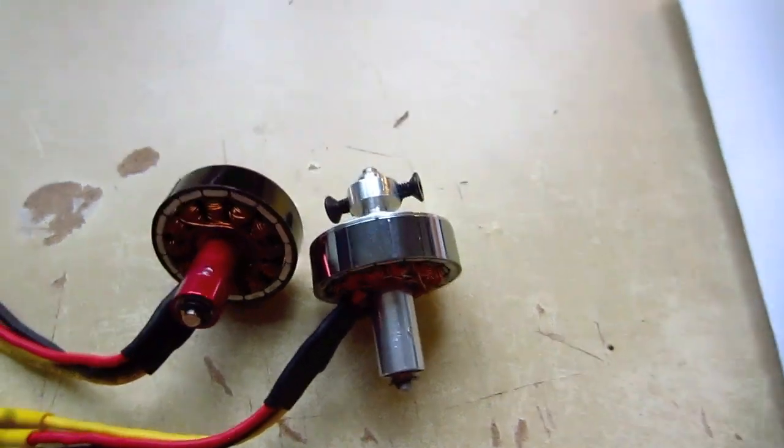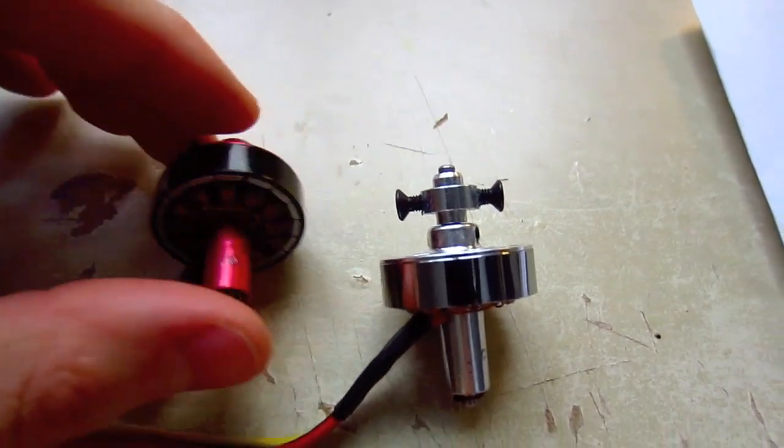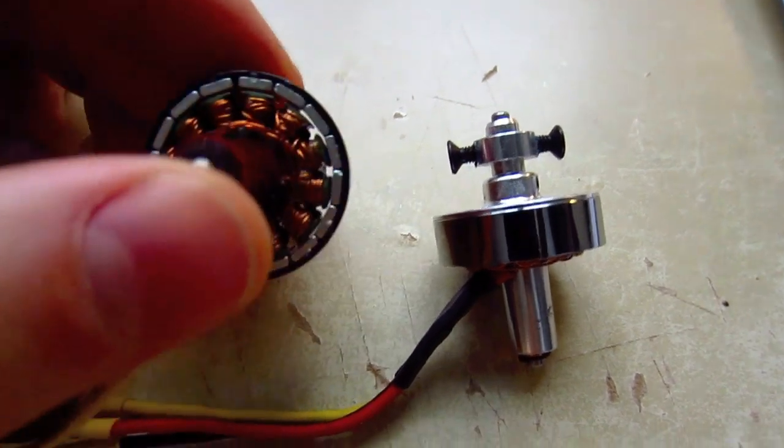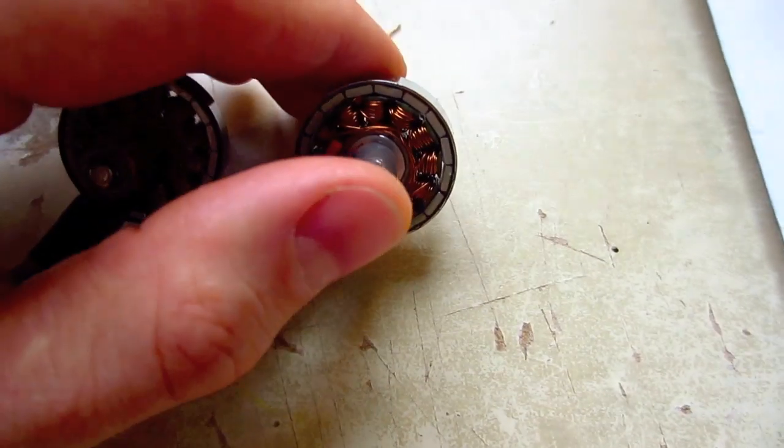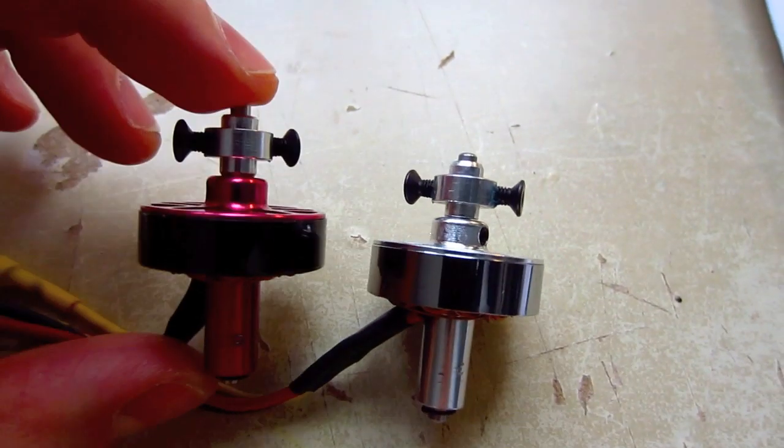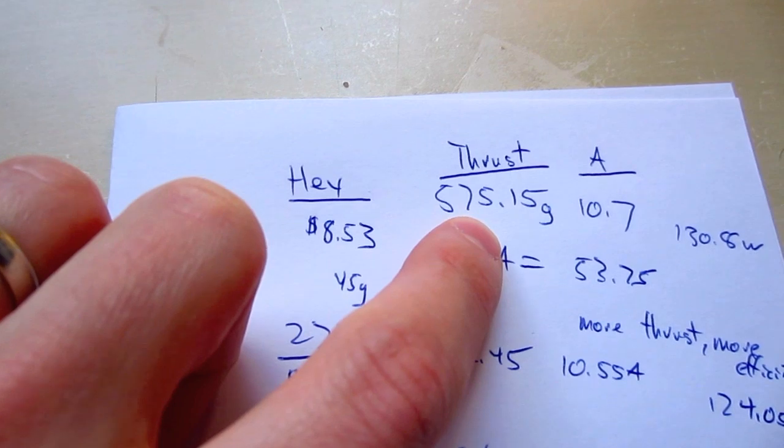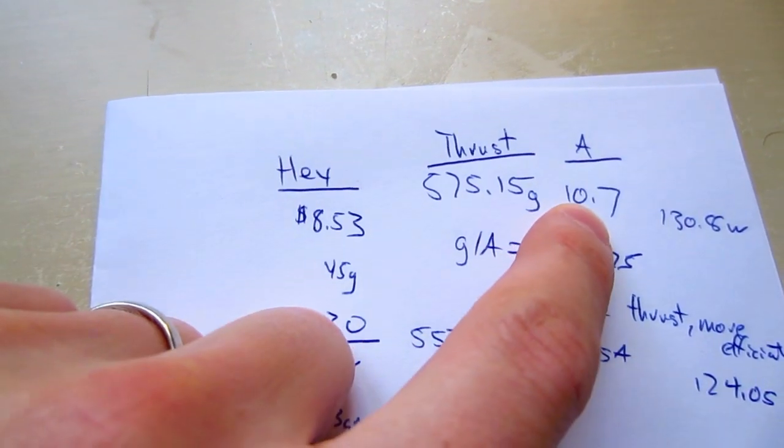Alright, so those are some interesting findings. I thought that this Turnigy was going to outperform the Hextronic because it supposedly has better windings and better magnets. But in actuality, the Hextronic created an average of 575 grams of thrust at 10.7 amps.